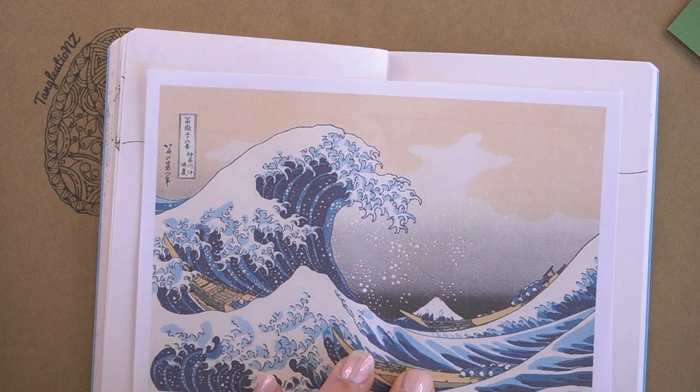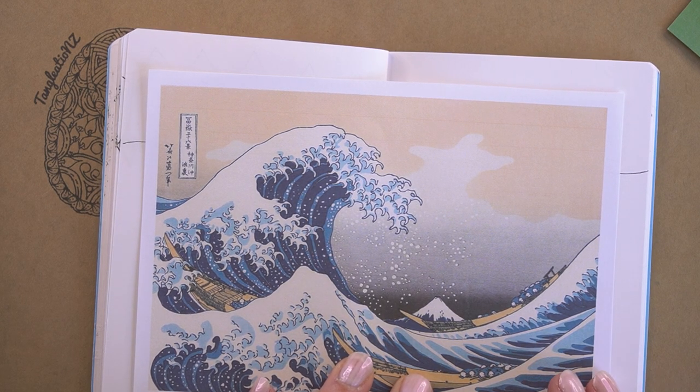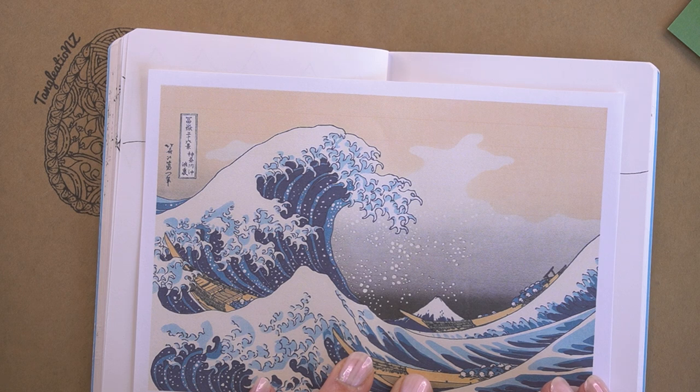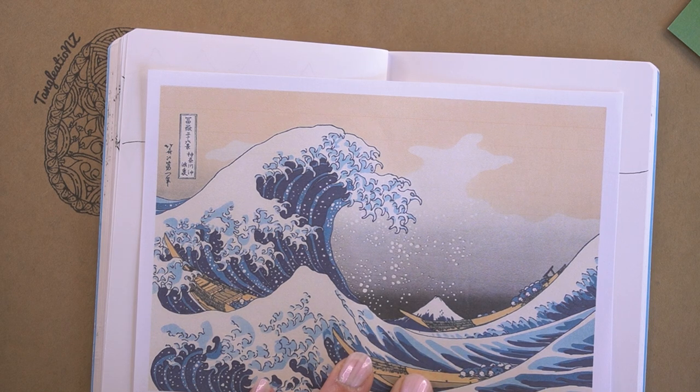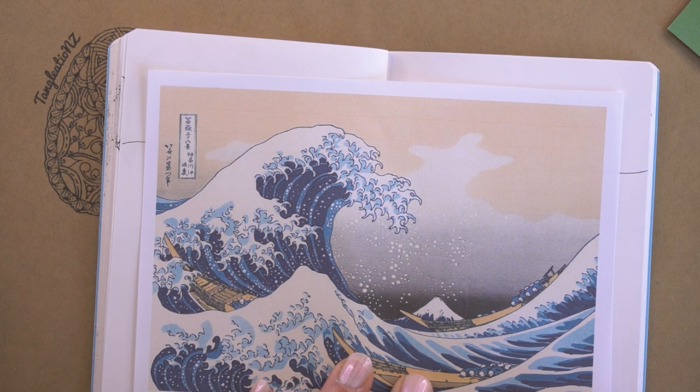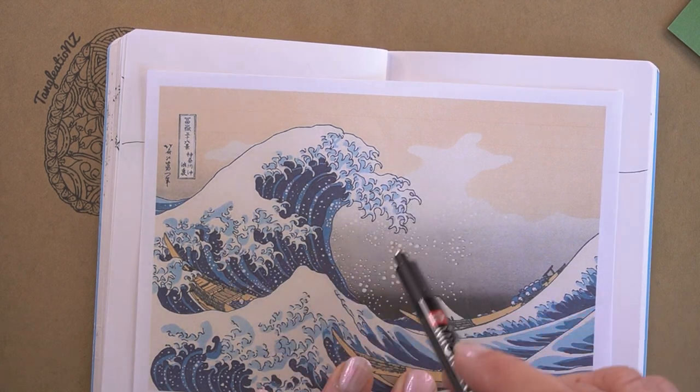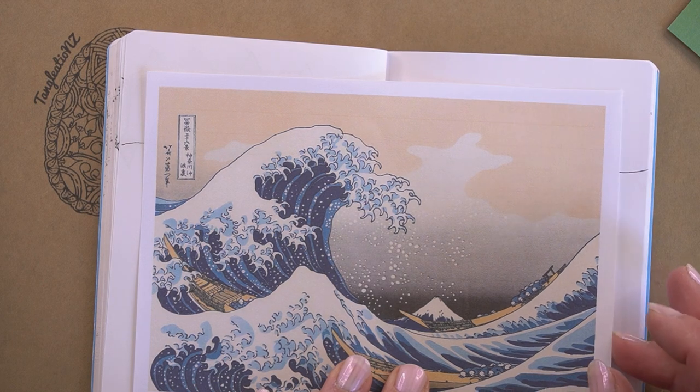He was a Japanese artist and printmaker of the Edo period and is best known as the author of the woodblock print series 36 Views of Mount Fuji. This one includes the internationally iconic print The Great Wave of Kanagawa. We can see here where she gets her influence from for this tangle.